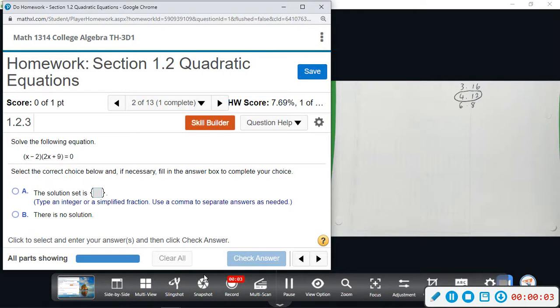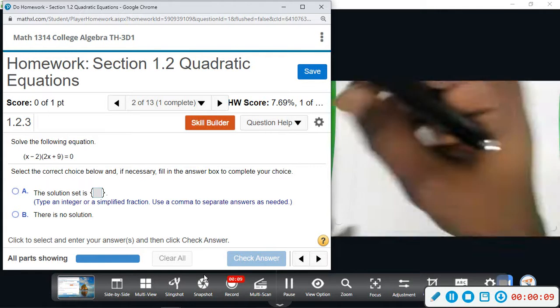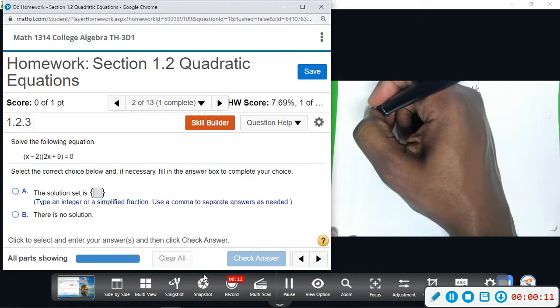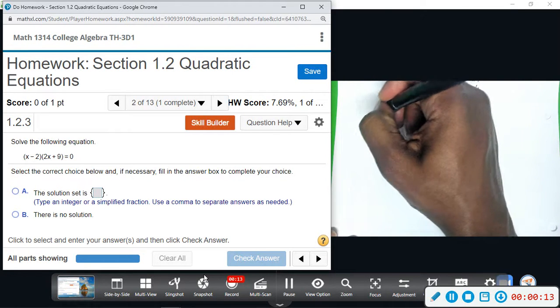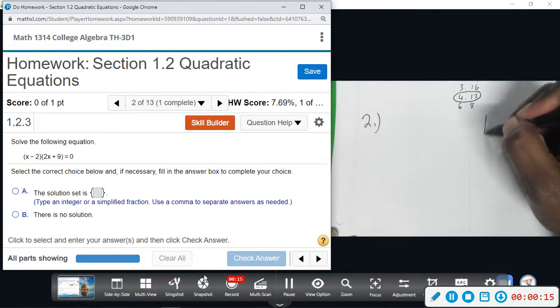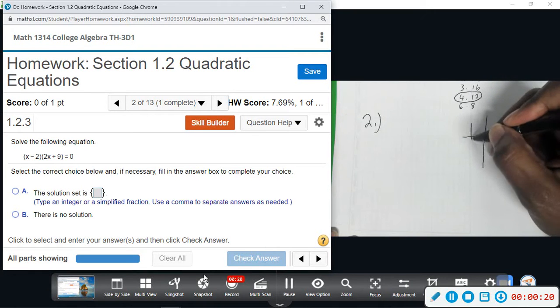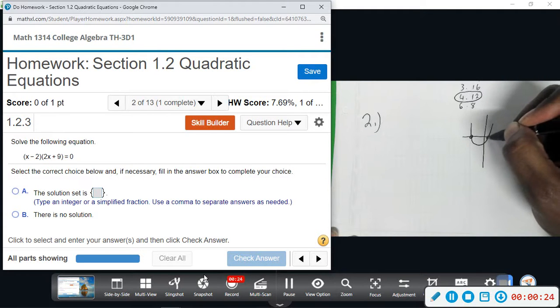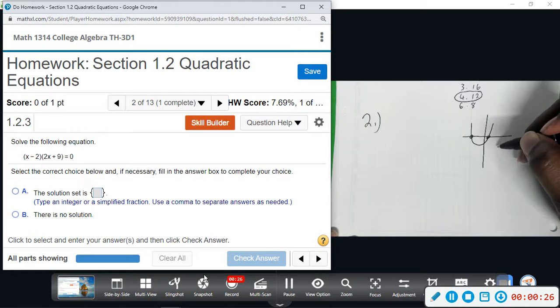Alright, number two. We just want to solve the equation. So once you factor like we did in problem one, this is a quadratic. So when we get to graphing, a quadratic equation looks like a parabola, it's a U-shape. Either it opens up and we have two points where it crosses the x-axis, or it opens down.